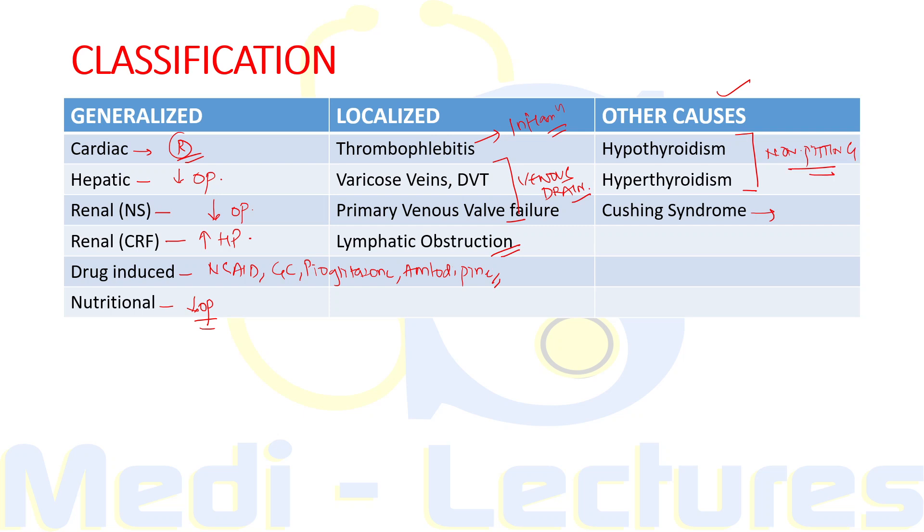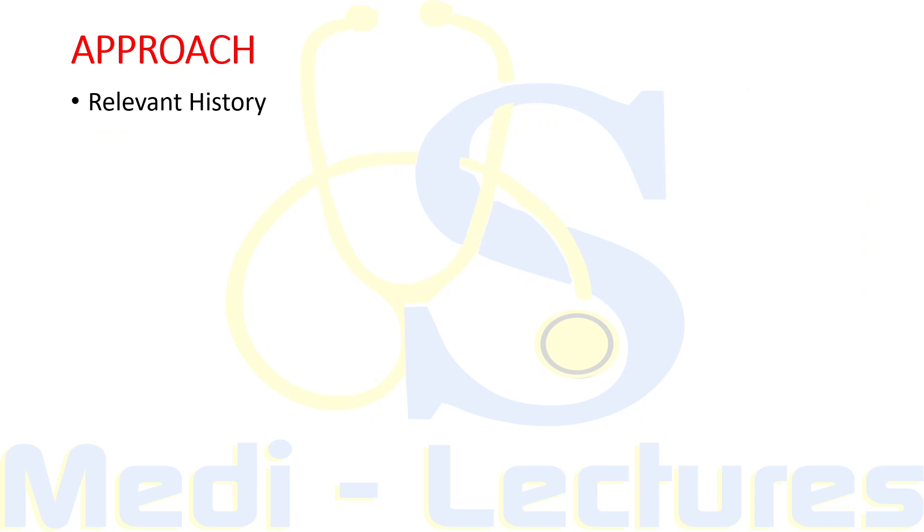Now let's come on to the most important part, that is how will we approach a patient in OPD. Most important thing is we have to take relevant history. We will ask what is the duration of edema, whether it is acute or chronic. Acute causes of edema can be due to infections while chronic are due to chronic underlying diseases like heart failure, chronic liver failure, renal failure, etc. What is the location, whether edema is unilateral or bilateral, localized or generalized.